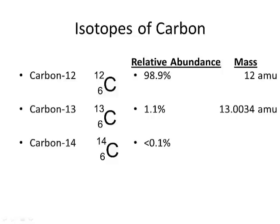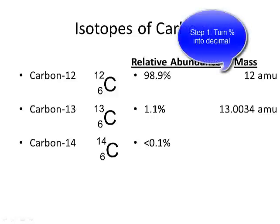Now to calculate average atomic mass — there are three steps in this process. Step one: we need to turn the percentages into decimals by dividing each by 100. So we get 0.989 and 0.011. Carbon-14 has such low abundance that it's not going to affect our calculation much, so we're going to ignore it for now.